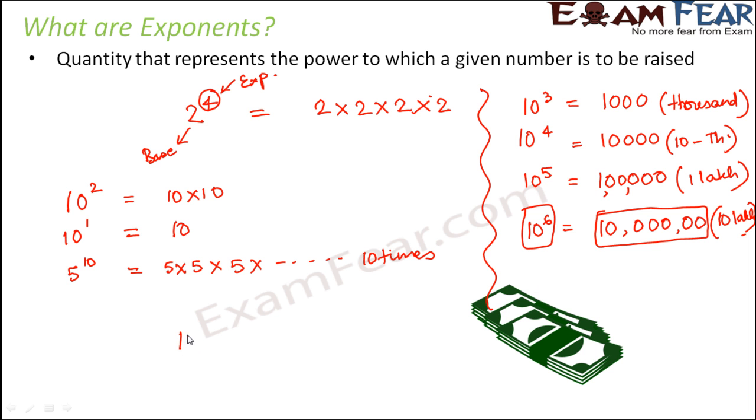So instead of writing the zeros, if we represent it like this, like 10 to the power 3, 10 to the power 4, 10 to the power 5, 10 to the power 6 and so on, the confusion of the number of zeros would reduce. So this is about exponents.